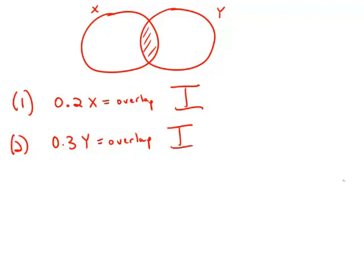But now very interesting, when we combine the statements, statement number one, statement number two, now we know that the overlap, those people that are in both clubs, they account for 20% of X and they account for 30% of Y.